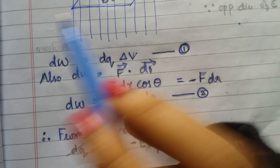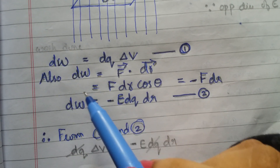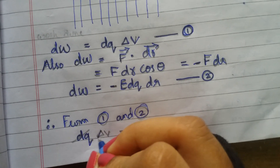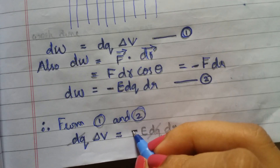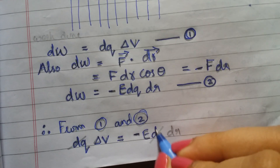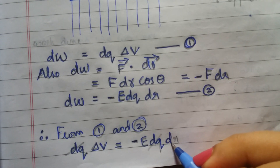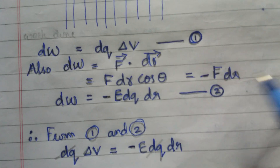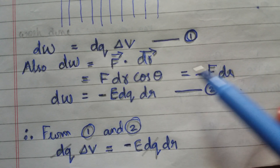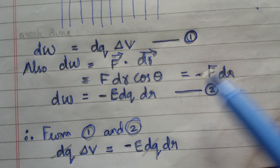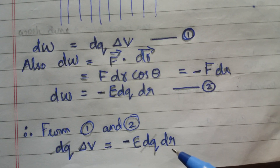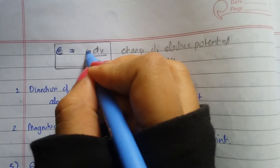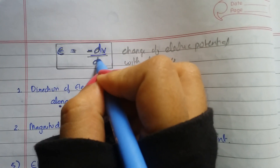From equations one and two, the left-hand side is the same — both equal dW — so we can equate them: dq·delta V equals minus E·dq·dr. The minus E·dq comes from substituting F as E·dq.